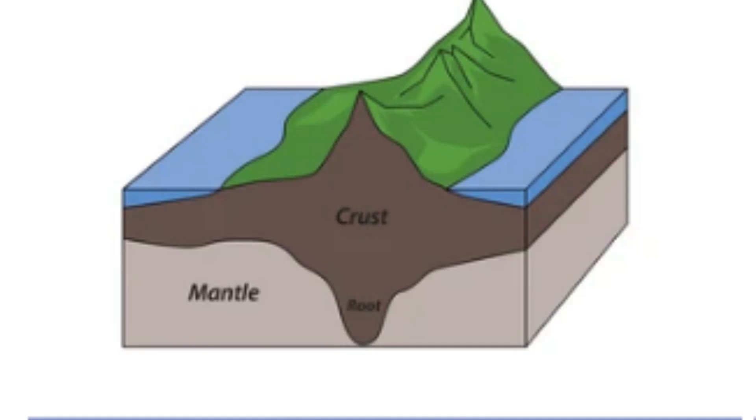As mountains and other features are formed, they push down on the underlying lithosphere, causing it to sink into the denser asthenosphere. This sinking creates a depression that is filled in by the surrounding mantle, which then exerts an upward force on the lithosphere, ultimately causing it to float back to its original position. This process is known as isostatic rebound.